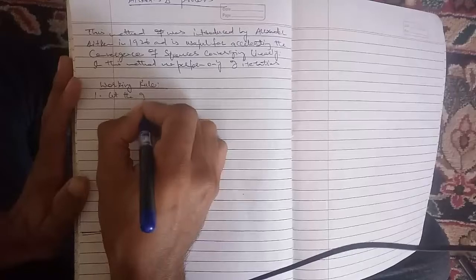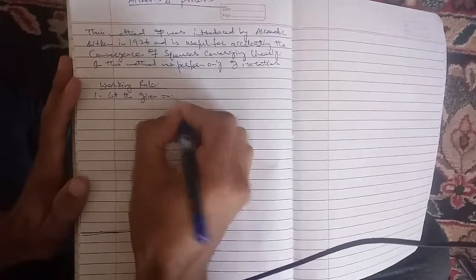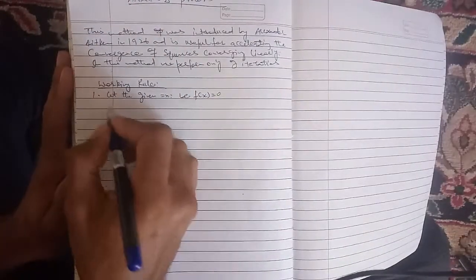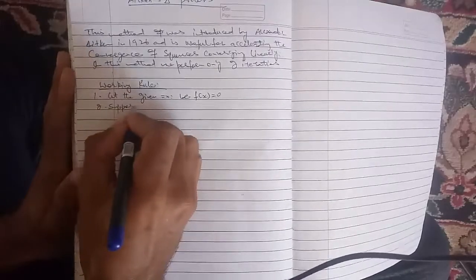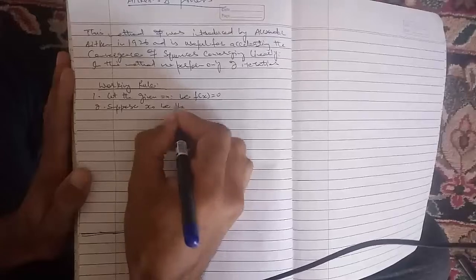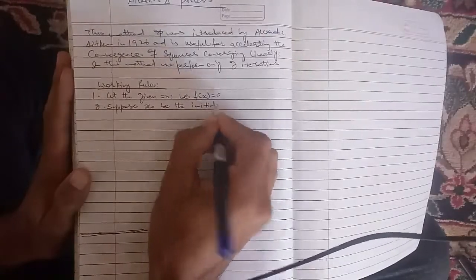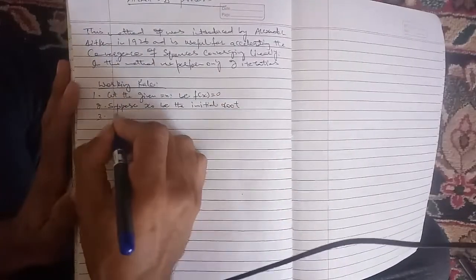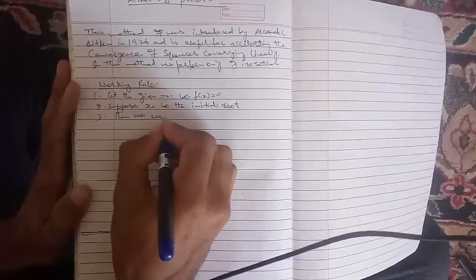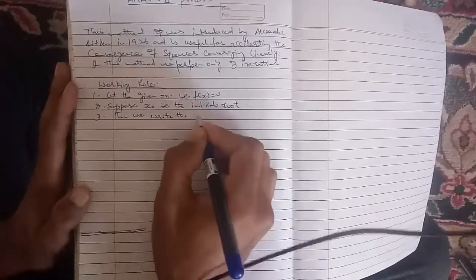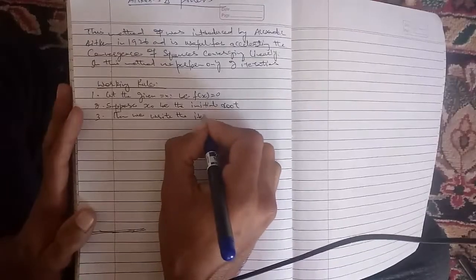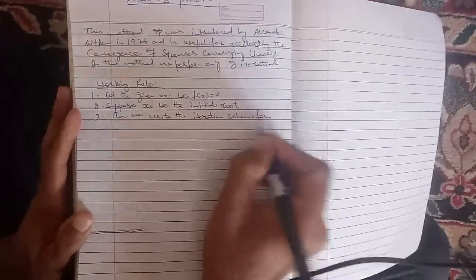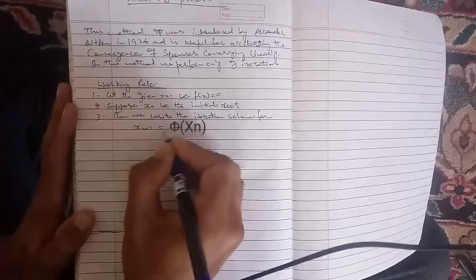Let the given equation be f(x) equals 0. Suppose x₀ be the initial root. Then we write the iteration scheme form: x_{n+1} equals φ(x_n).